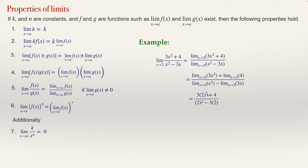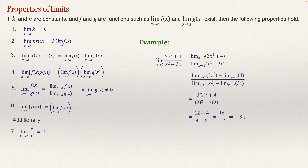Now computing: 2² = 4, so 3 times 4 = 12; 12 plus 4 = 16 at the numerator. At the denominator, 4 minus 6 = −2. So we get 16 divided by −2, which simplifies to −8. That is the answer to this problem.